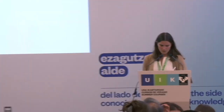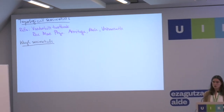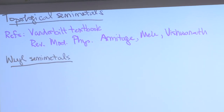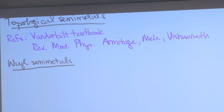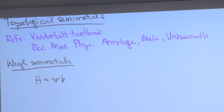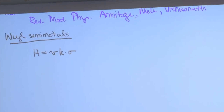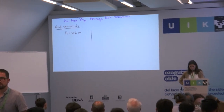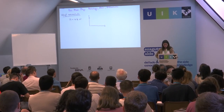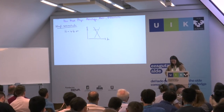Most of what we're going to talk about will be Weyl semimetals. The canonical form for a Weyl Hamiltonian is H equals v·k·σ, where the σ's are the Pauli matrices and the k's are the wave vectors. This gives us a linear dispersion. There'll be some Fermi level somewhere, and so the Fermi surface will be a sphere — I can only draw two dimensions here so it looks like a circle, but the Fermi surface is a sphere satisfying v²k² = E_F².